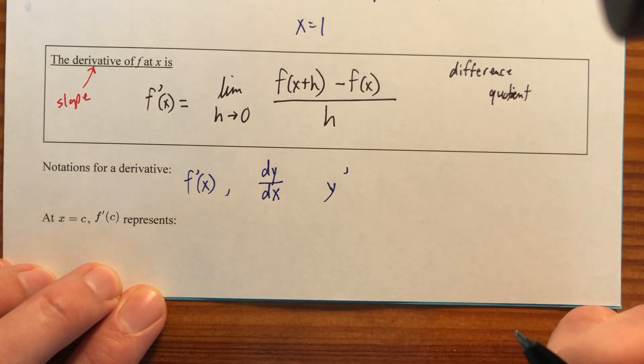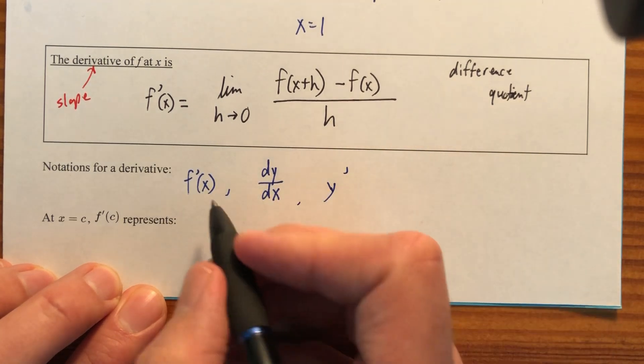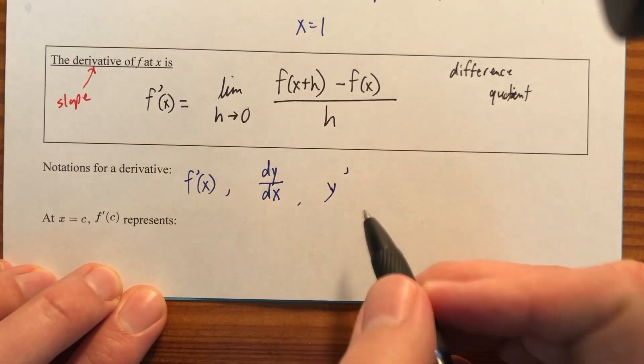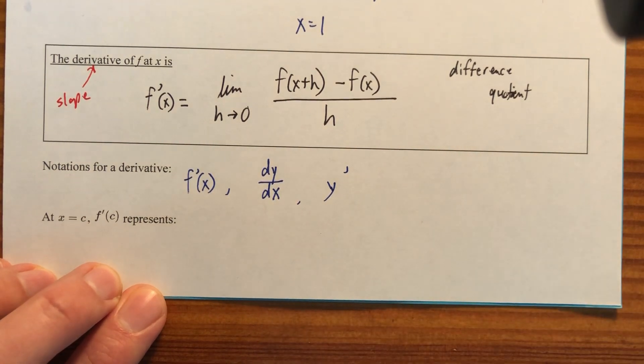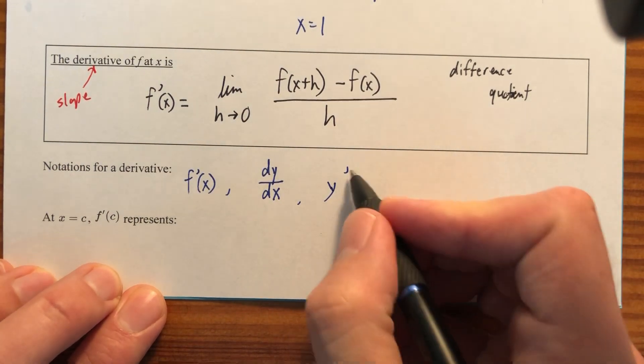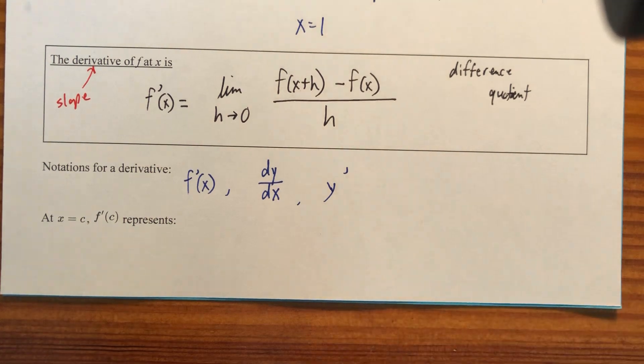When you have an apostrophe there, you call it prime. So we have f prime of x, dy dx, dy over dx, often just called dy dx, and then y prime. So all of these are notations for the derivative.